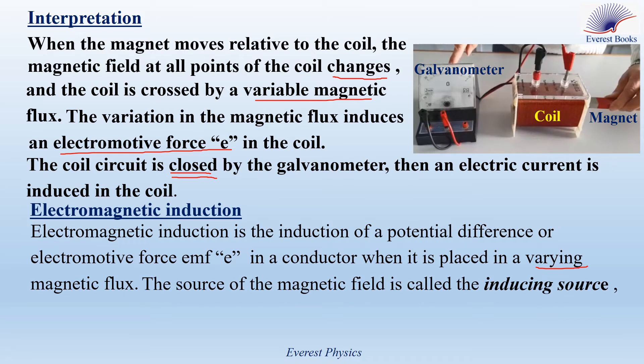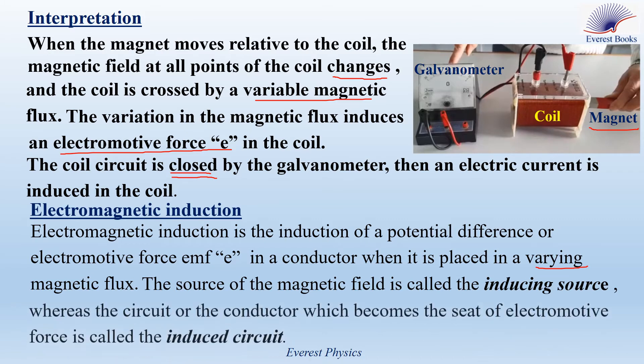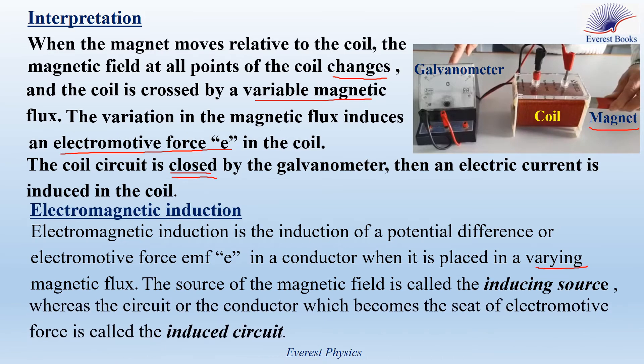The source of the magnetic field is called the inducing source. In our experiment, the magnet is called the inducing source since it is the source of the magnetic field. Whereas the circuit or conductor which becomes the seat of the electromotive force is called the induced circuit. In our experiment, the coil is called the induced circuit since we have an induced voltage in the coil.